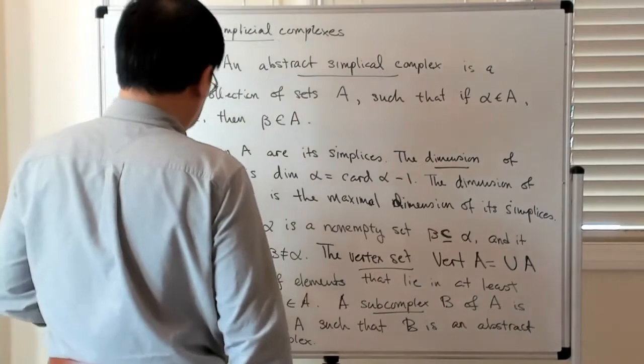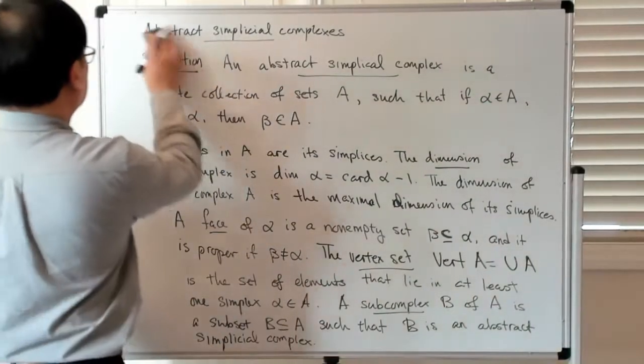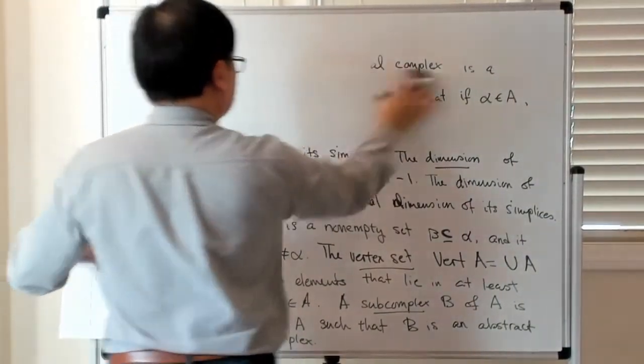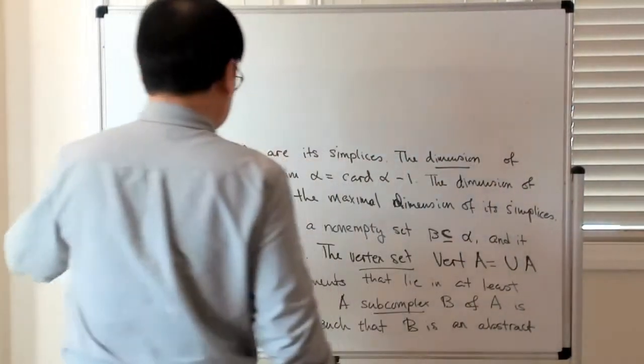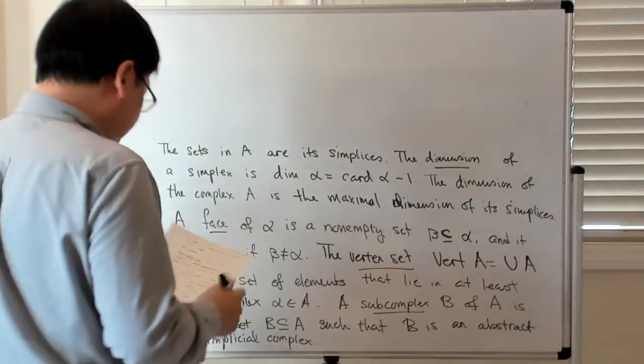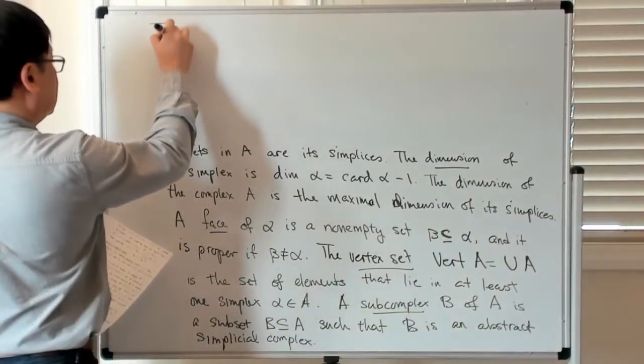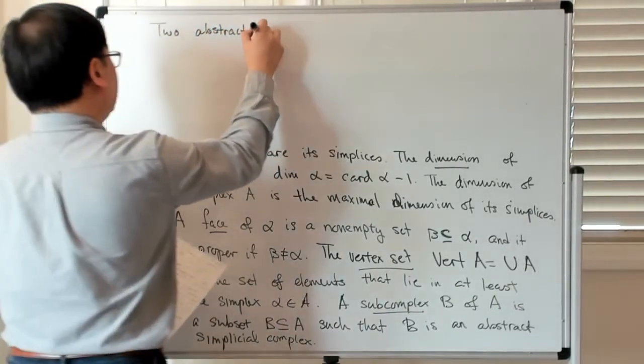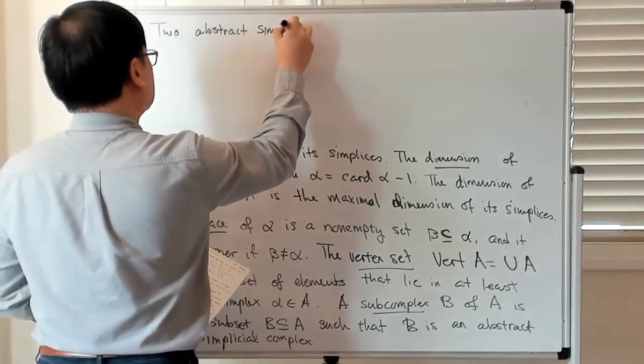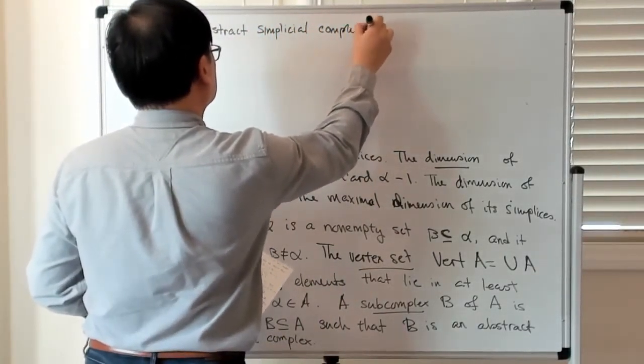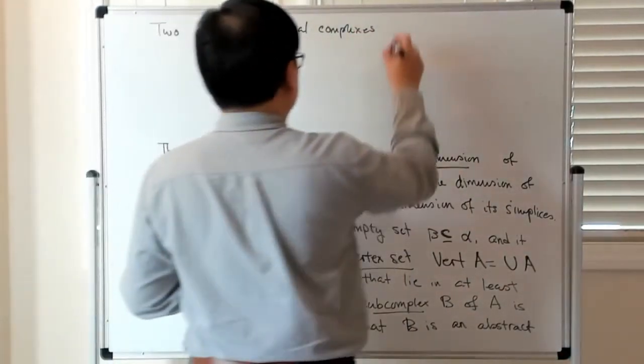That's the abstract notion of a simplicial complex. Now we want to say something about when two abstract simplicial complexes are in some sense the same. Two abstract simplicial complexes are isomorphic...